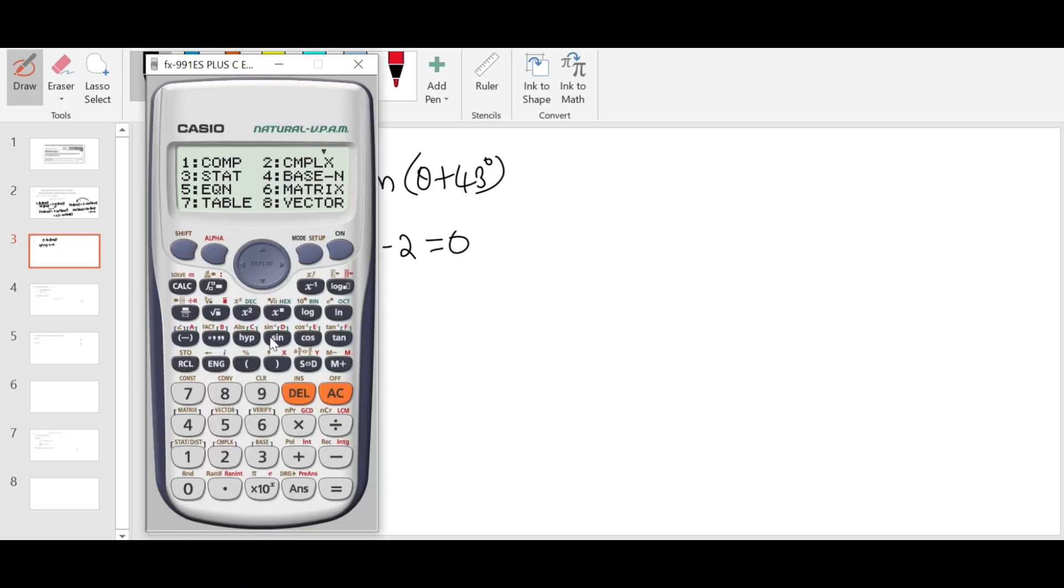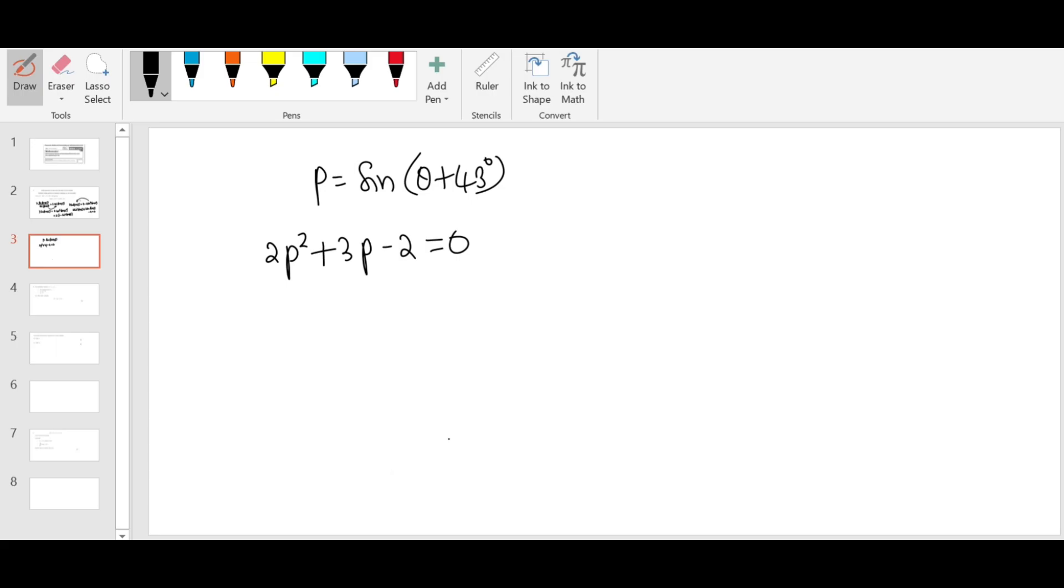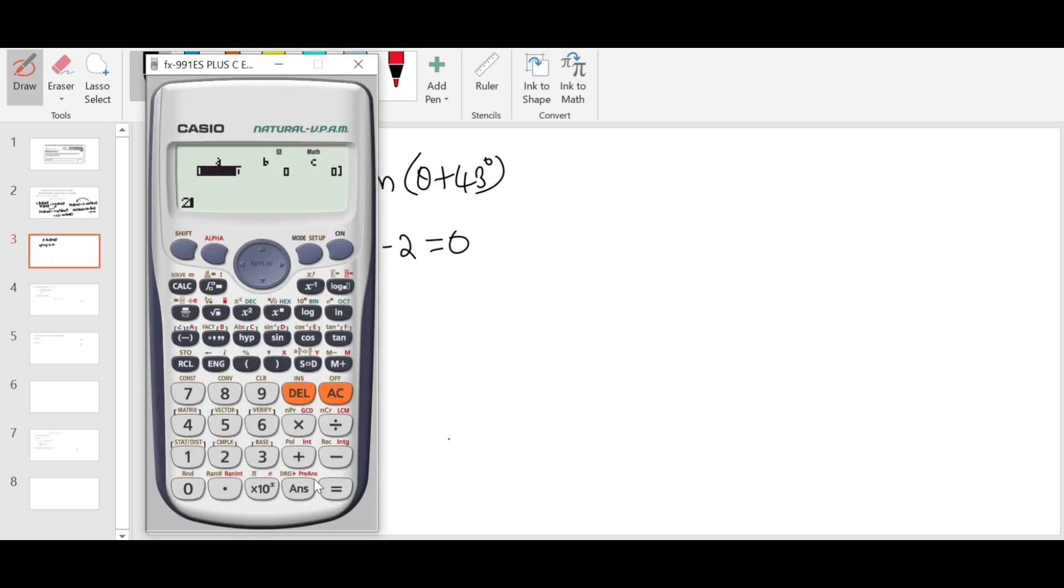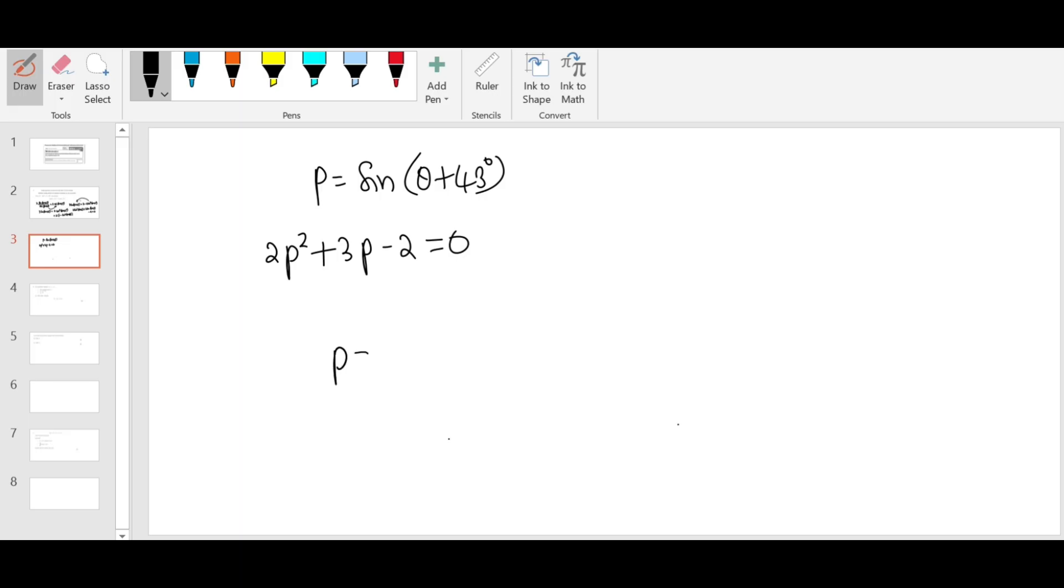So the quadratic equation becomes 2P squared plus 3P minus 2 equals 0. I'm going to use my calculator to solve it. 2, 3, minus 2. I got 1 over 2 and minus 2. P is 1 over 2, P is minus 2. But I need to write a step: 2P minus 1 times P plus 2 equals 0.